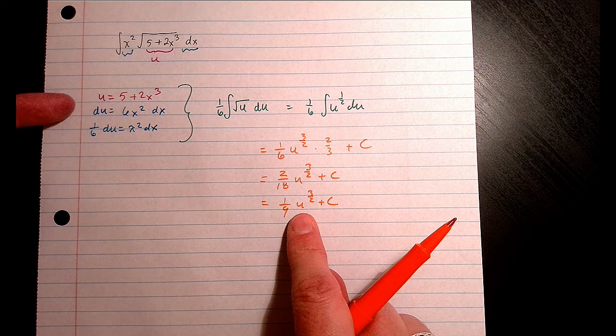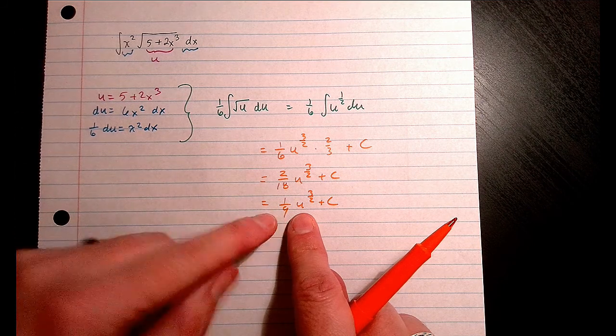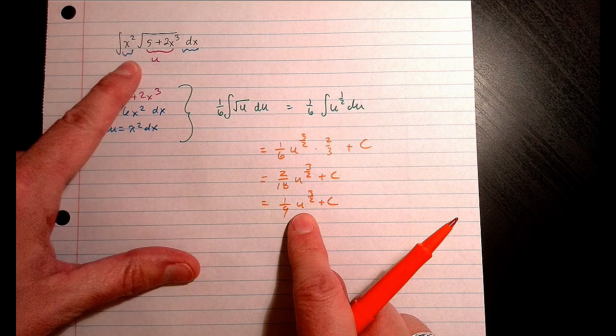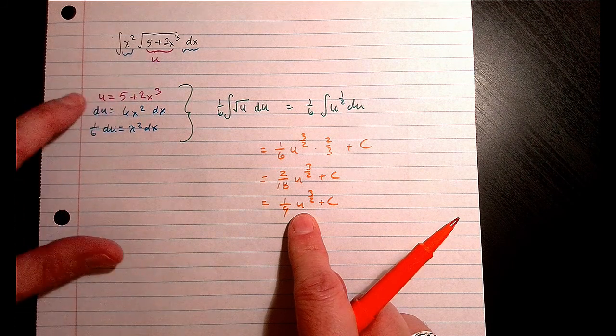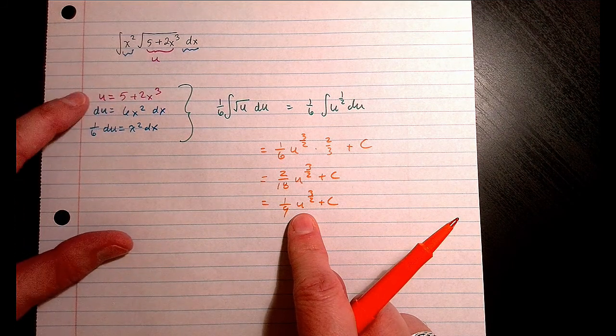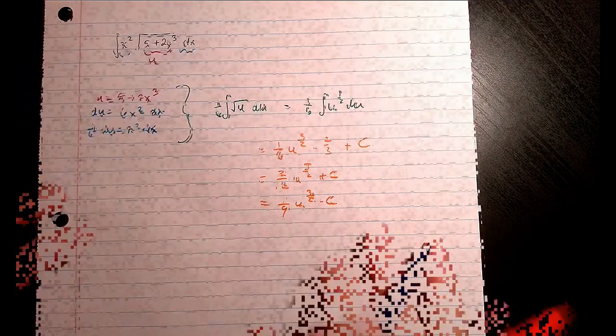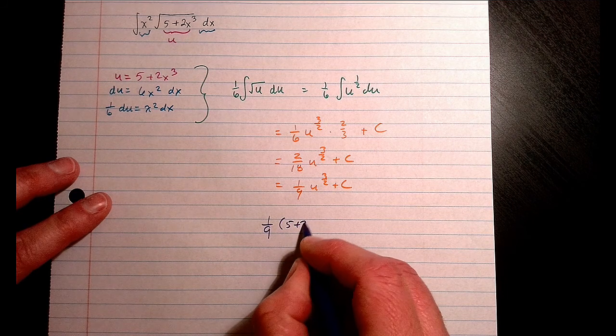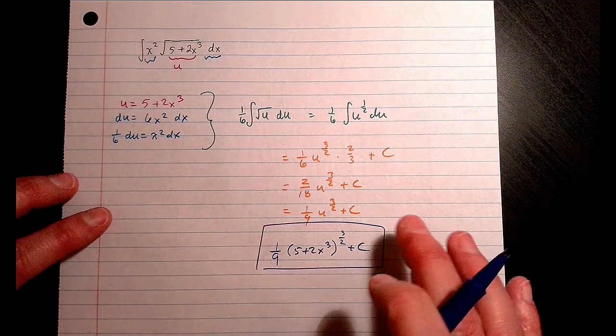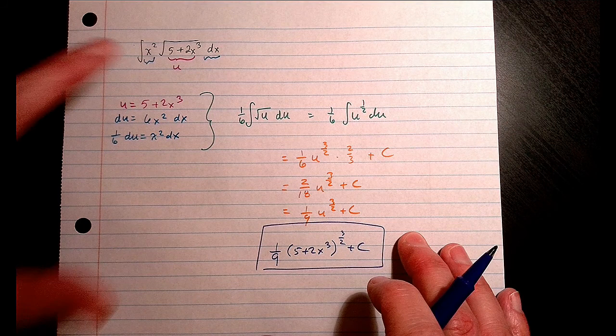Because the original problem was in terms of x, not u. We're only using the letter u as a change in variables to make the integration much simpler. So that is my antiderivative to this indefinite integral.